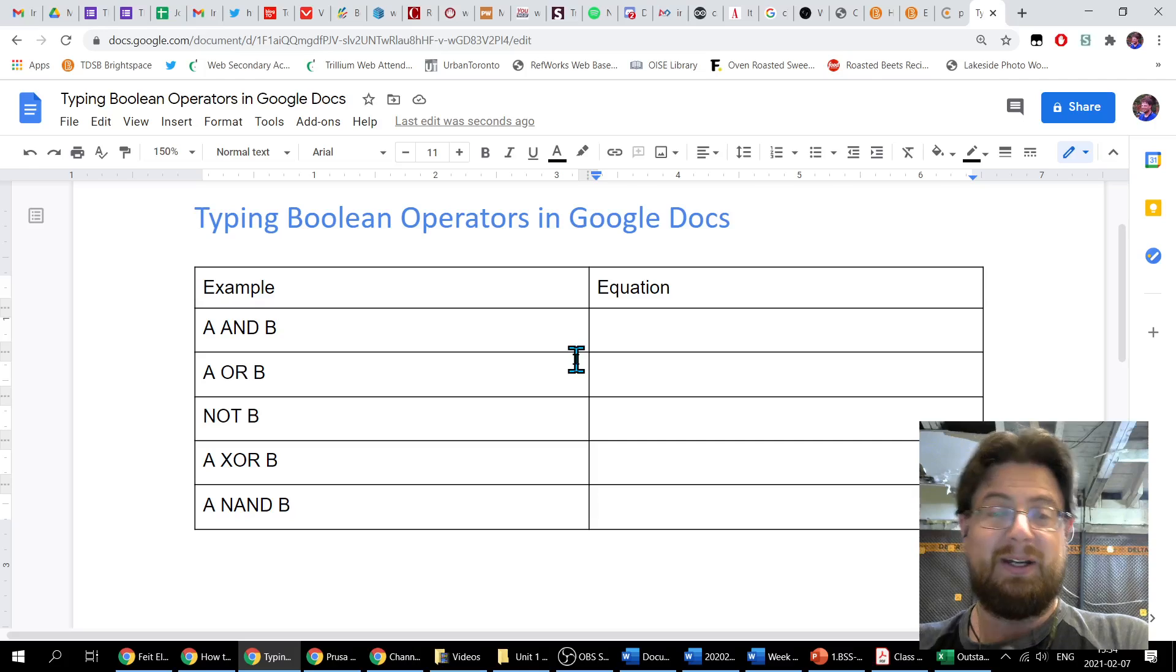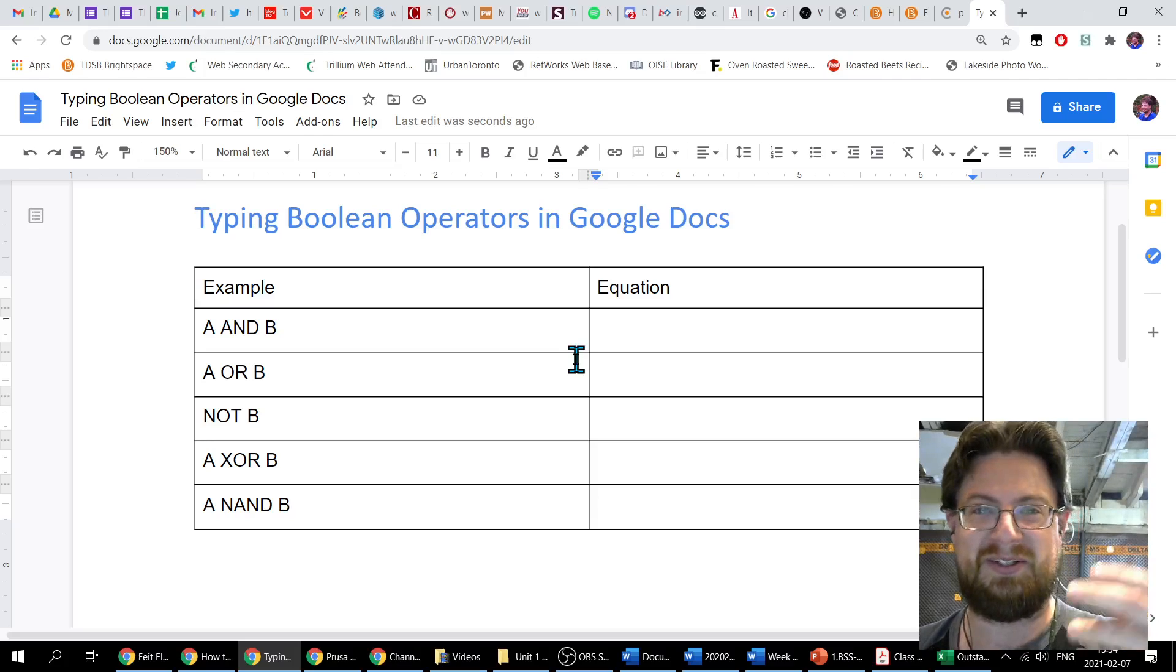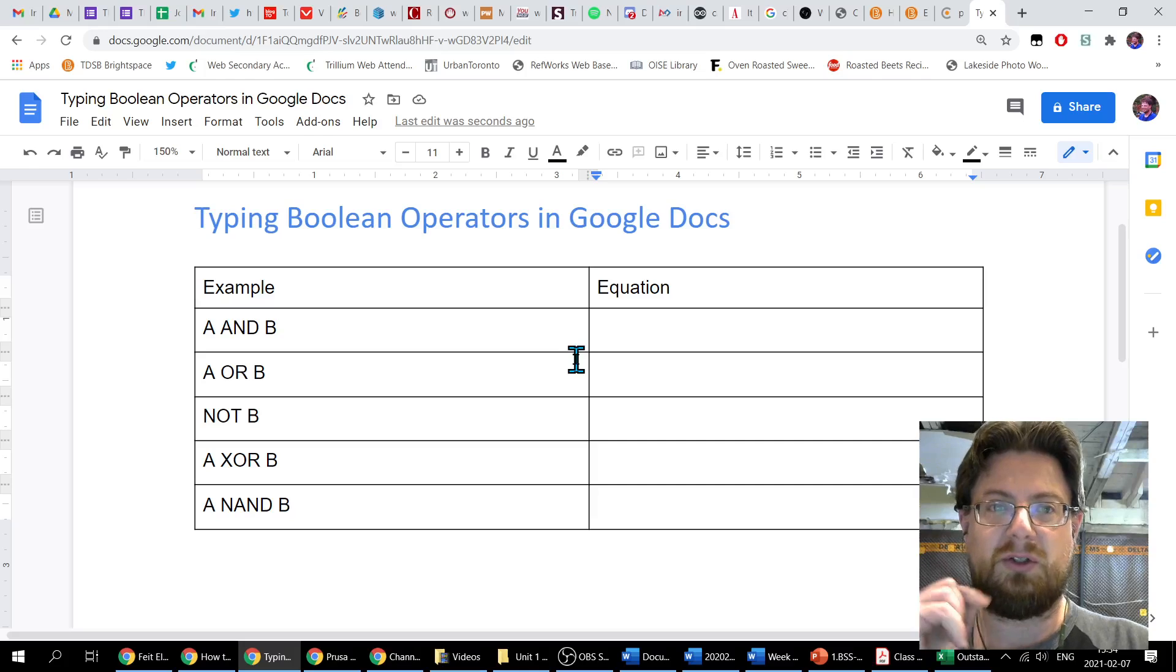Hey everyone. I know some of you don't have Microsoft Word and are using Google Docs to complete this work. In theory, everyone has access to Google Docs - it's free and included in your TDSP student accounts. So if we're trying to do this Boolean algebra thing in Google Docs, you can do it. I'm going to show you how.